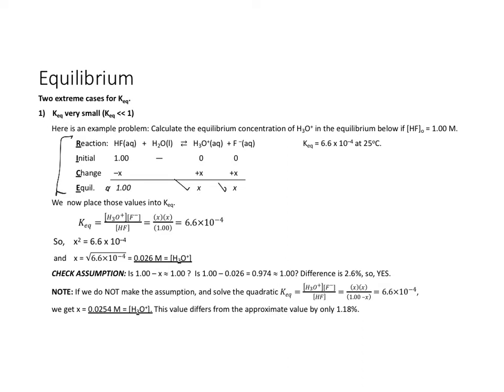We put those values into our KEQ expression. There's products, hydronium and fluoride. Hydronium times fluoride over reactants, HF. So that's products over reactants. We plug in. That's x times x divided by 1 is equal to KEQ. That's given in our problem statement. Or x squared is equal to 6.6 times 10 to the minus 4th. If we take the square root of both sides, we get that the hydronium concentration is 0.026.